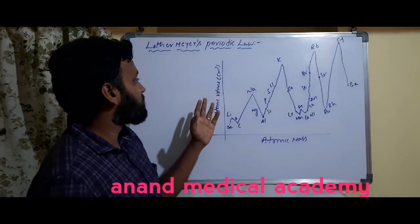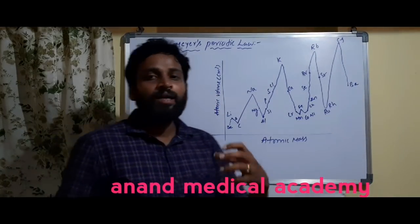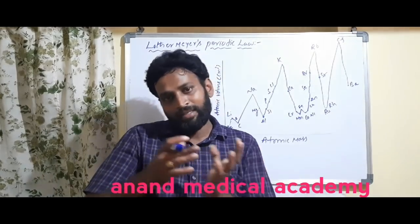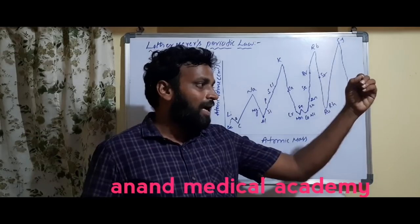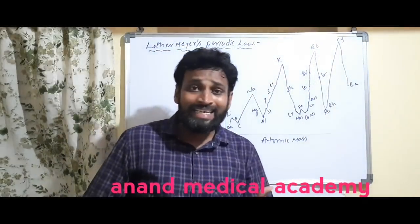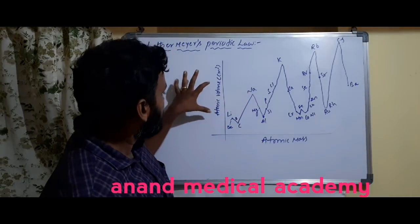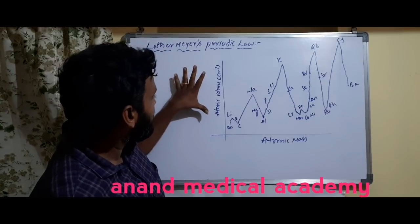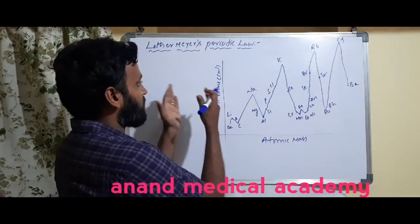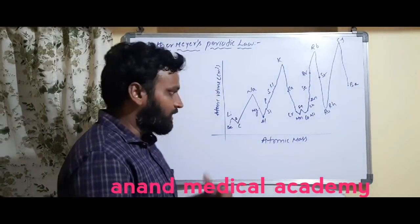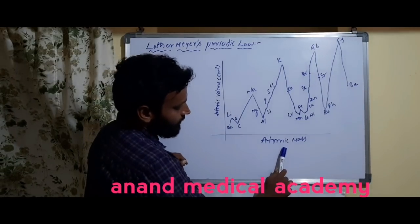Lothar Mayer gave a graph between atomic volumes versus atomic mass. The difference between Mendeleev's periodic table and Mayer's classification is that Mayer considered atomic volumes, while Mendeleev considered atomic weights. In Mendeleev's table, elements were given in periods and groups, but Mayer represented them using curves — a graph of atomic volume versus atomic mass.